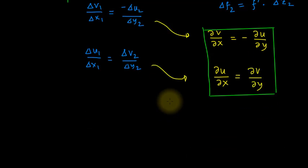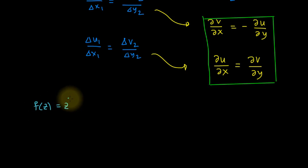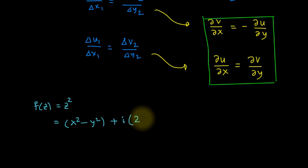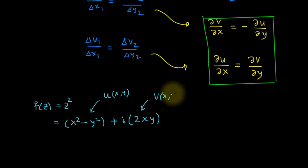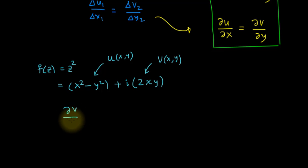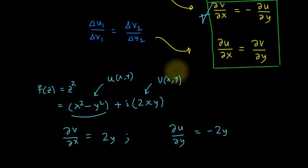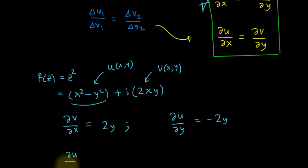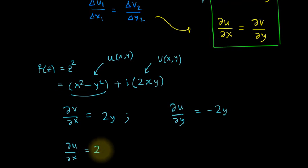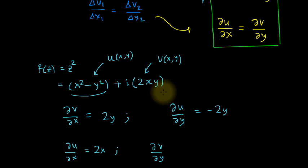Now let us verify with our example f(z) = z², where u(x,y) = x² − y² and v(x,y) = 2xy. Taking ∂v/∂x = 2y and ∂u/∂y = −2y, the equation ∂u/∂y = −∂v/∂x is satisfied. Also, ∂u/∂x = 2x and ∂v/∂y = 2x, so ∂u/∂x = ∂v/∂y is also satisfied. Both Cauchy-Riemann equations hold.